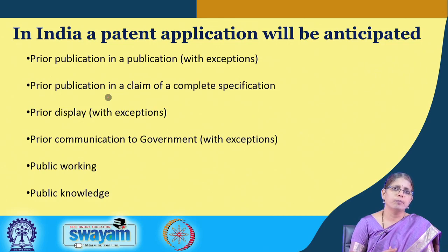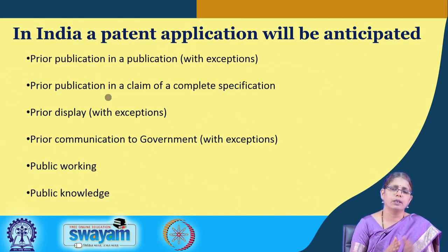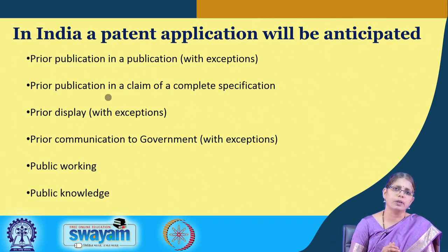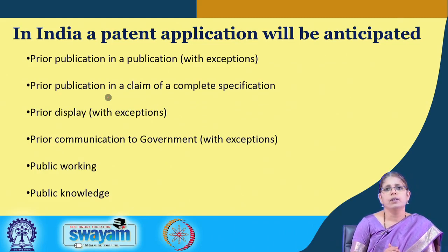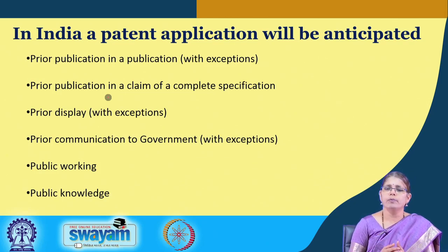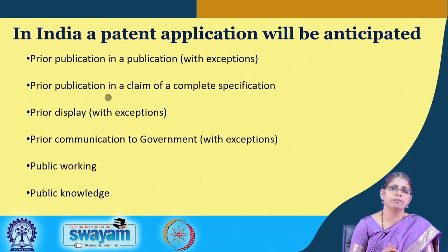The third category is what we call prior display — here also there are certain exceptions. A prior display in an exhibition would defeat the novelty of the invention. The exception is where the disclosure occurs within one year and you are moving with a patent application or there is a letter to the controller confirming the application is being followed up. There are also certain governmental clauses by which communication to the government will not mean anticipation under the law, and inventions acquired by the government for public purpose — such use for assessing the invention in the public — will not mean anticipation.